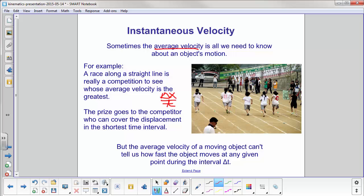Now, the average velocity of a moving object can't tell us how fast the object moves at any given point. It just gives you the average, the displacement divided by time. For example, this runner might have started off very fast and then slowed down. This runner might have started slow and sped up at the end. And you don't know which one wins based on that information. You'd have to know their average velocity. The one with the greatest average velocity was the winner.